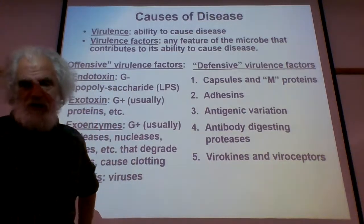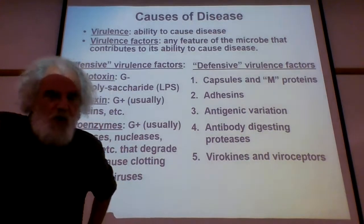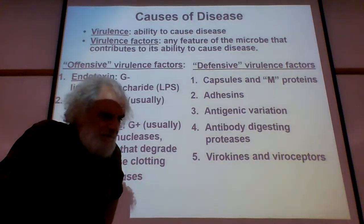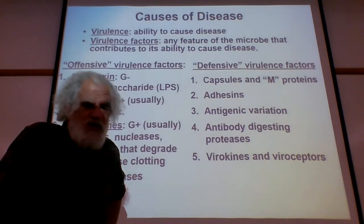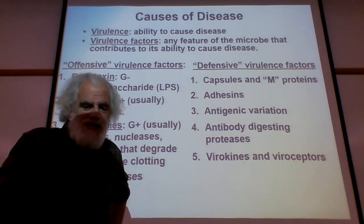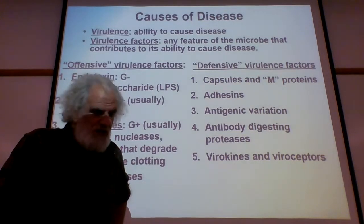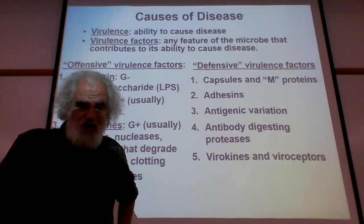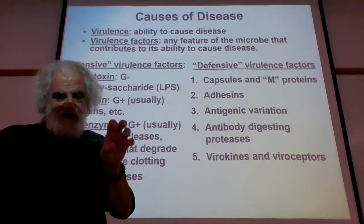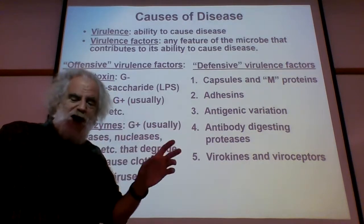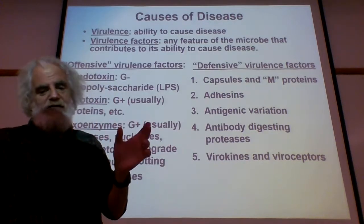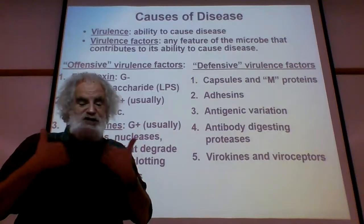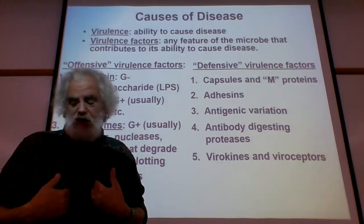With COVID, the angiotensin converting enzyme found a lot in the lungs is the binding site for the spike protein on the virus. That's why the virus tends to get into the lungs.